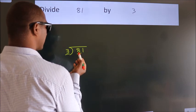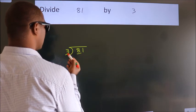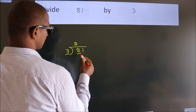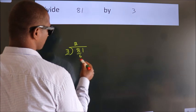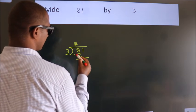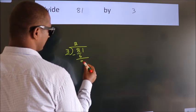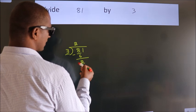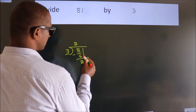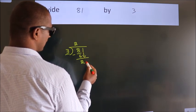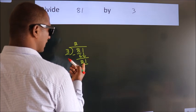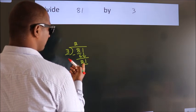A number close to 8 in the 3 times table is 3 twos, 6. Now we should subtract — we get 2. After this, bring down the beside number, so 1 down, giving us 21.